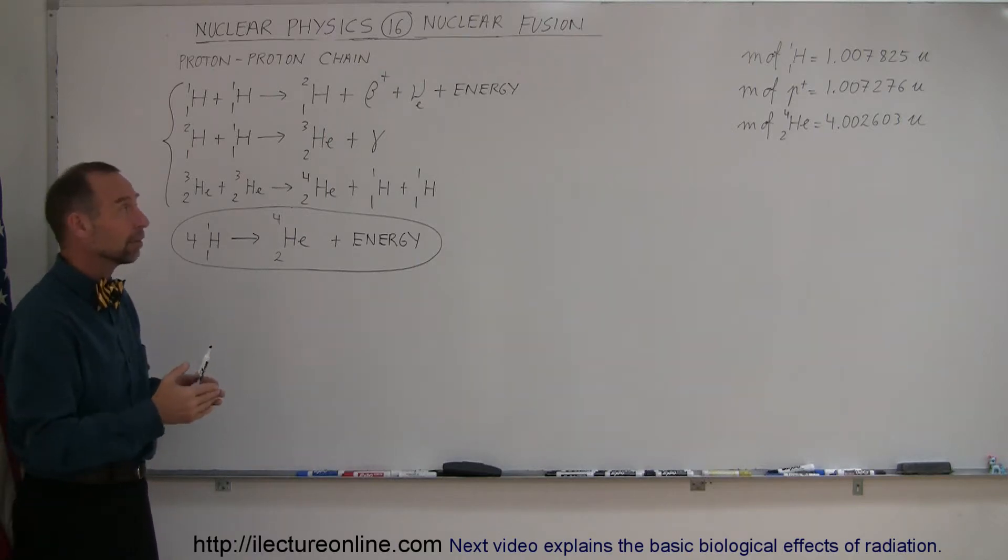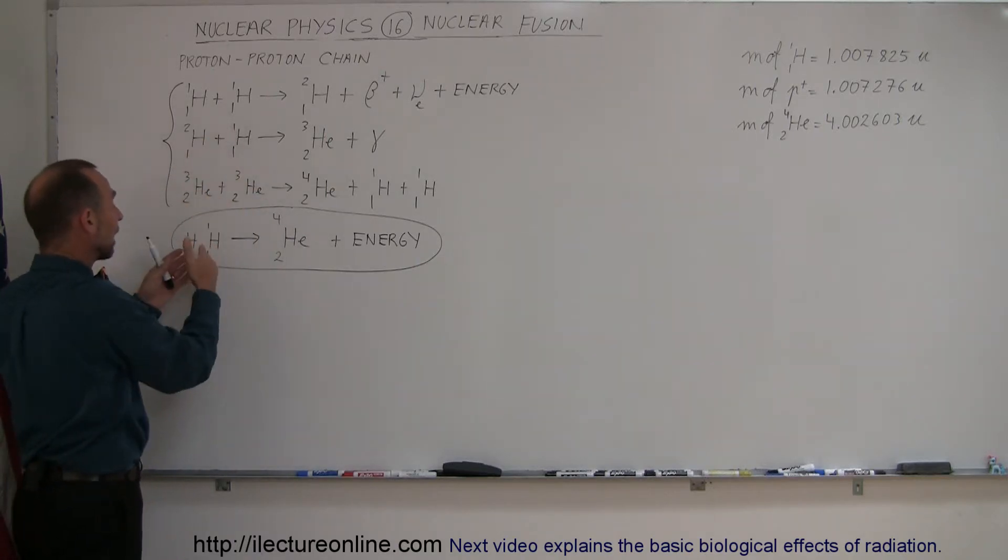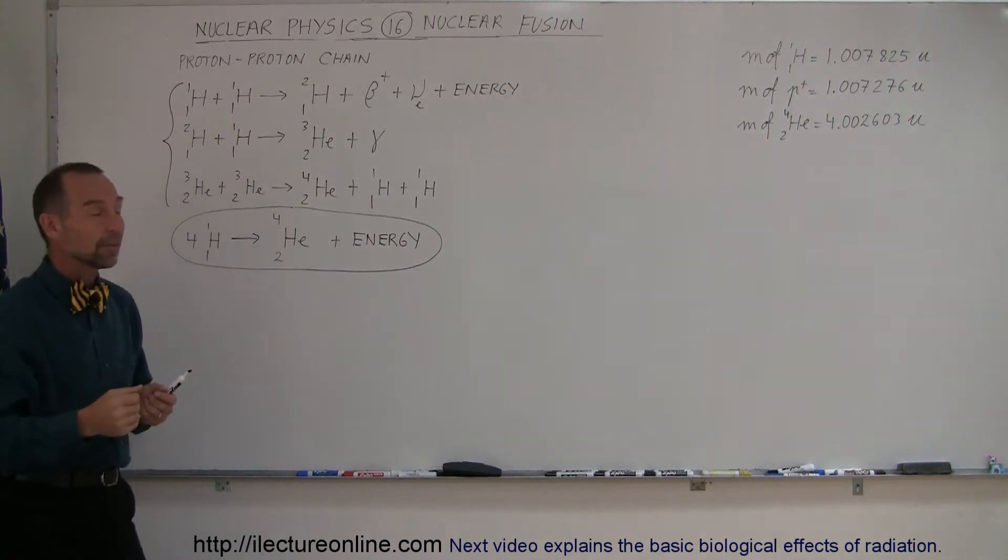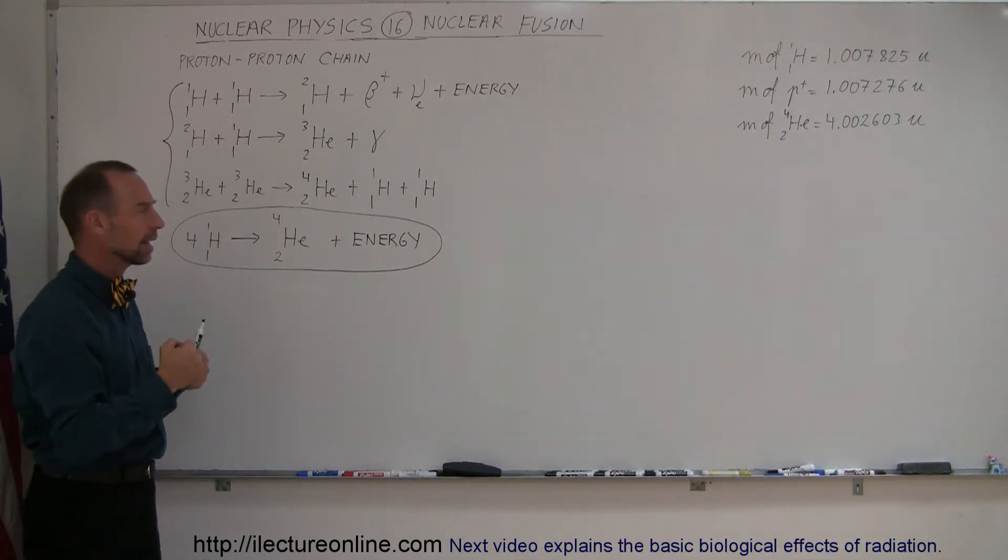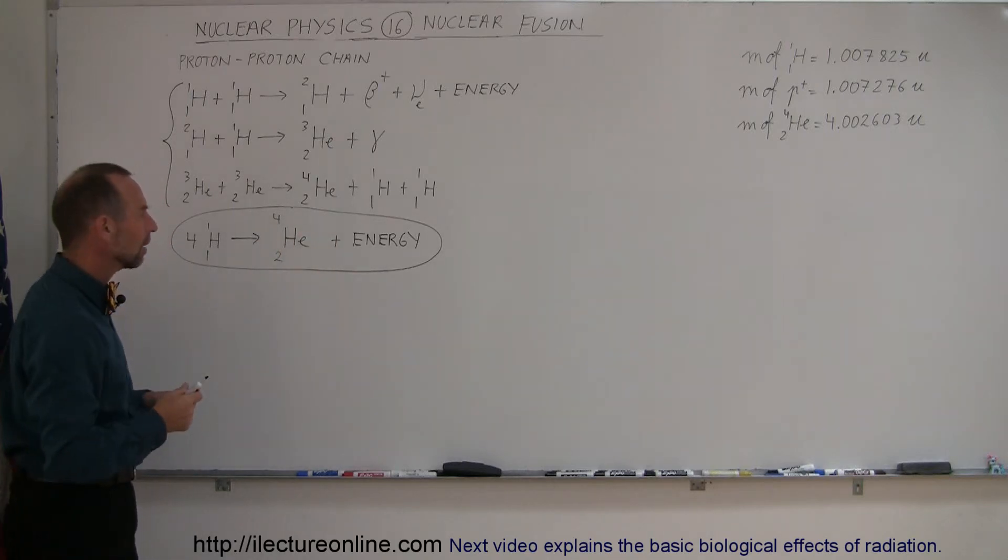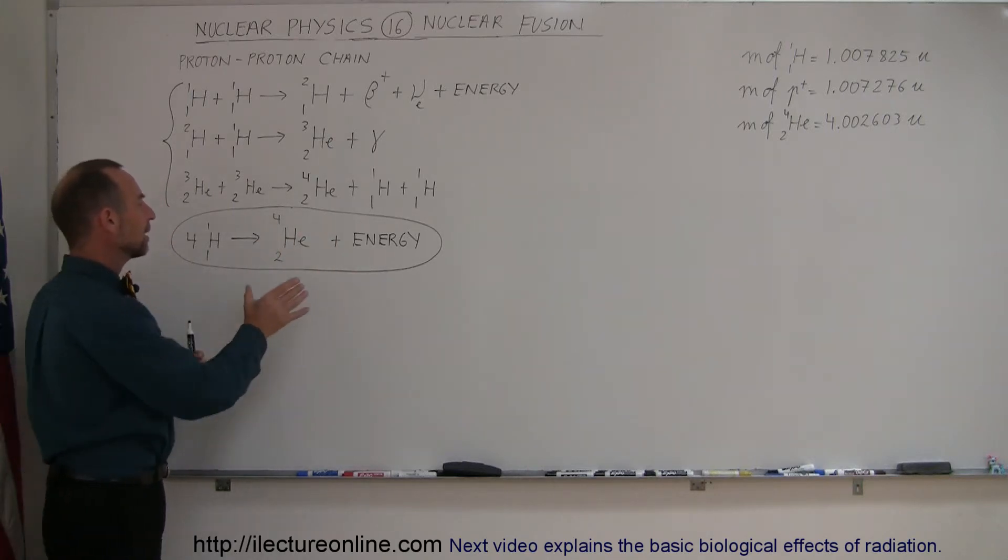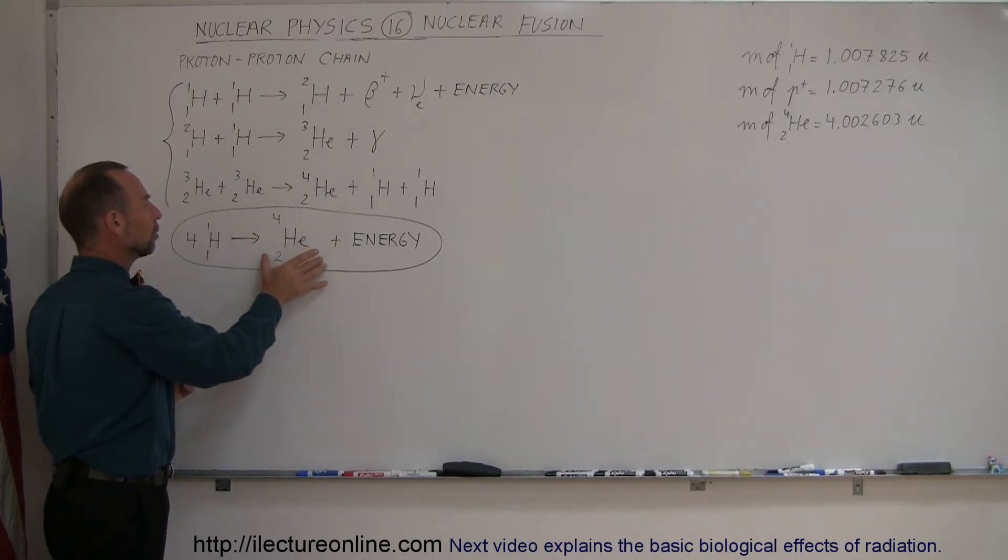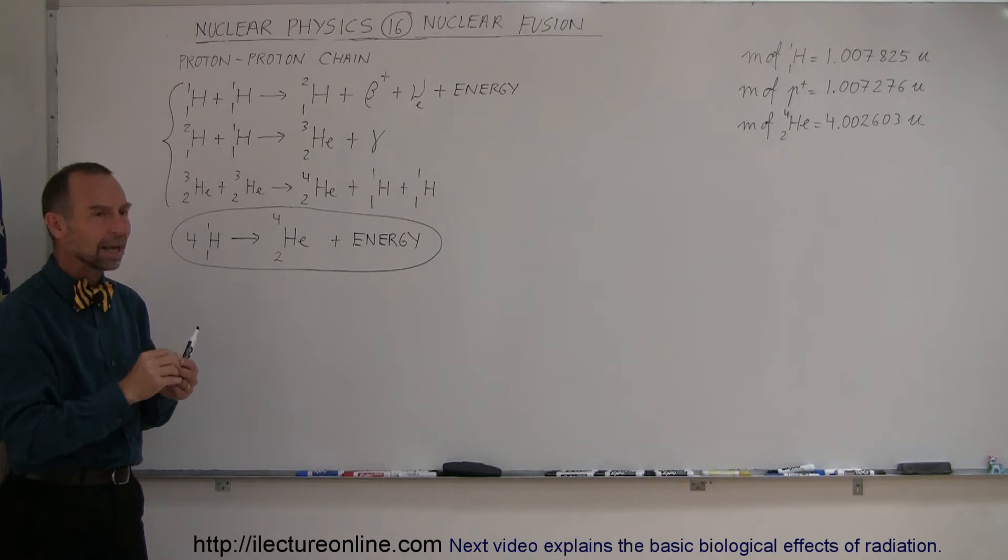When you put small nuclei together, for example when you put hydrogens together and make helium, that takes initially a lot of heat to make happen. The result is that net energy release is accomplished, and the mass of the helium nucleus is less than the mass of the individual hydrogen atoms and nuclei that were put together to make helium.